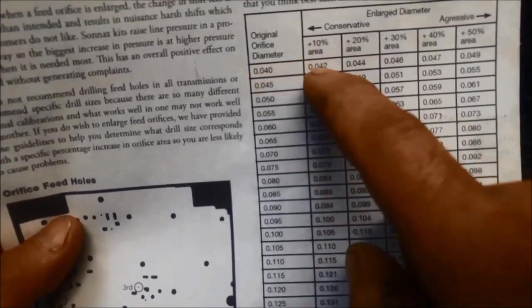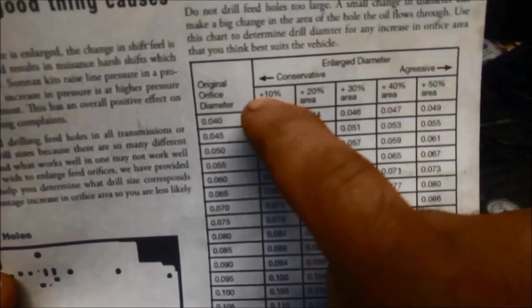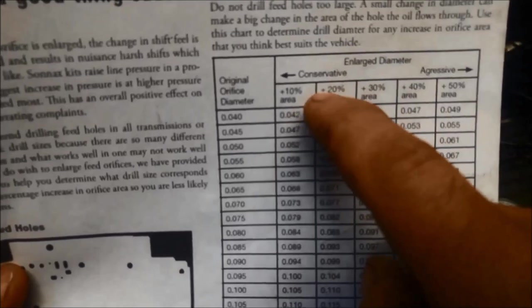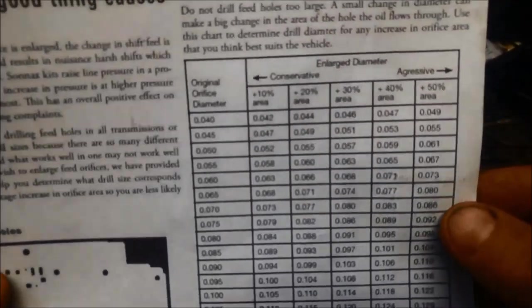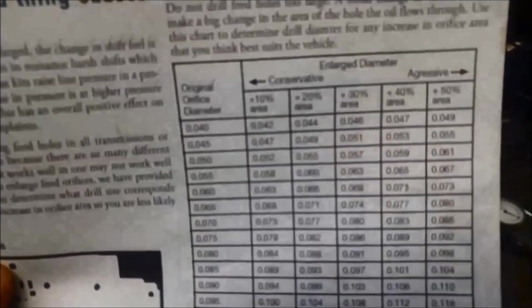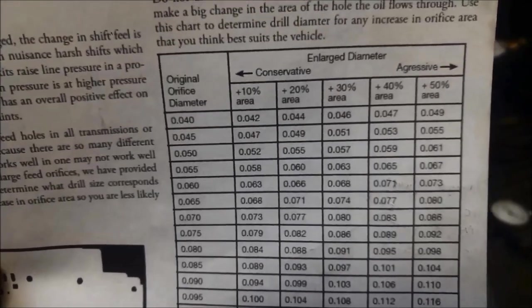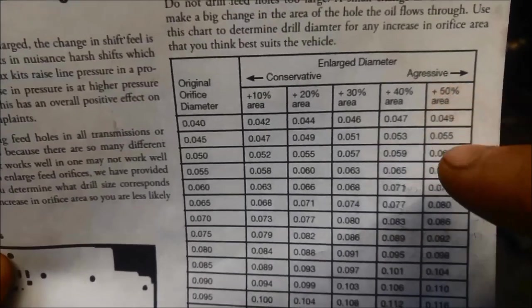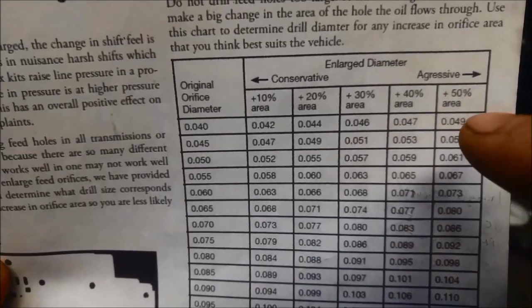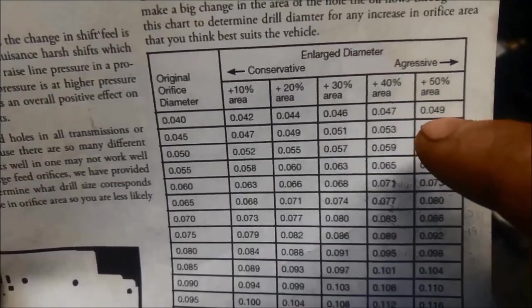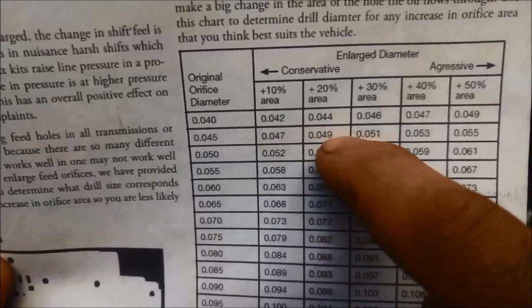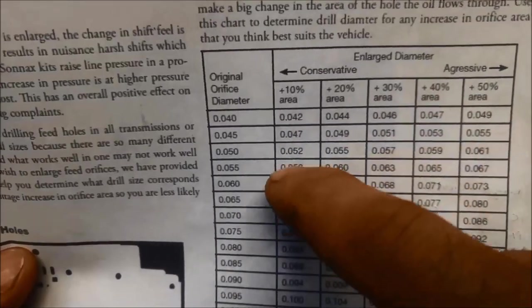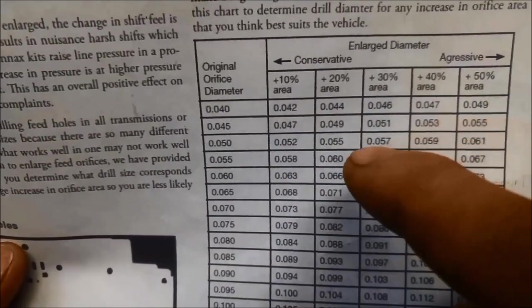And it also over here shows you the original hole size or the orifice size. And by increasing it, how much percentage-wise you've actually opened up the hole. And now what happens, if you go too crazy with it, it can be much more aggressive. You can see a 50% increase in the size, depending on what you want to achieve comfort-wise.